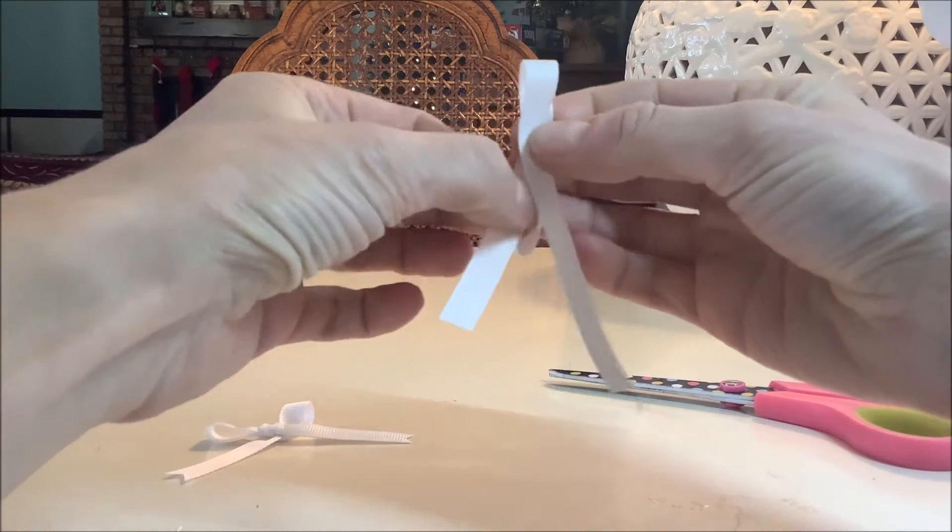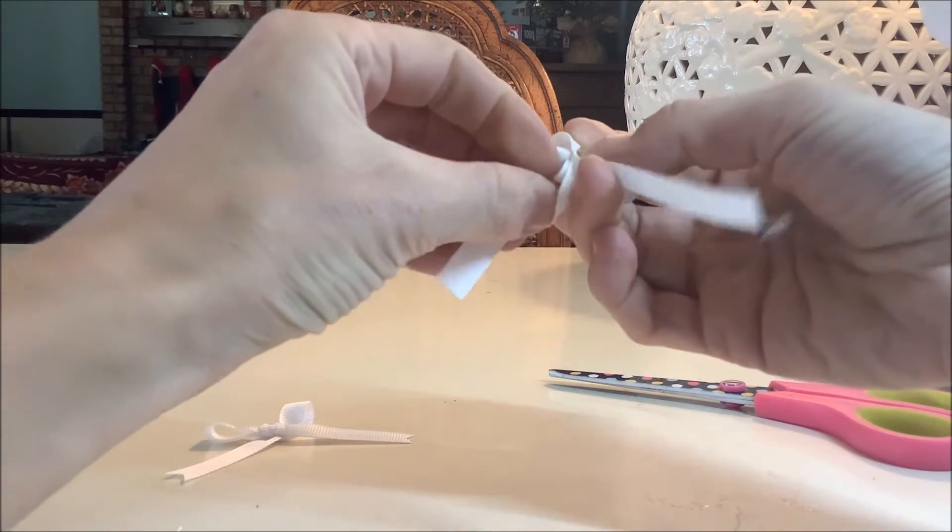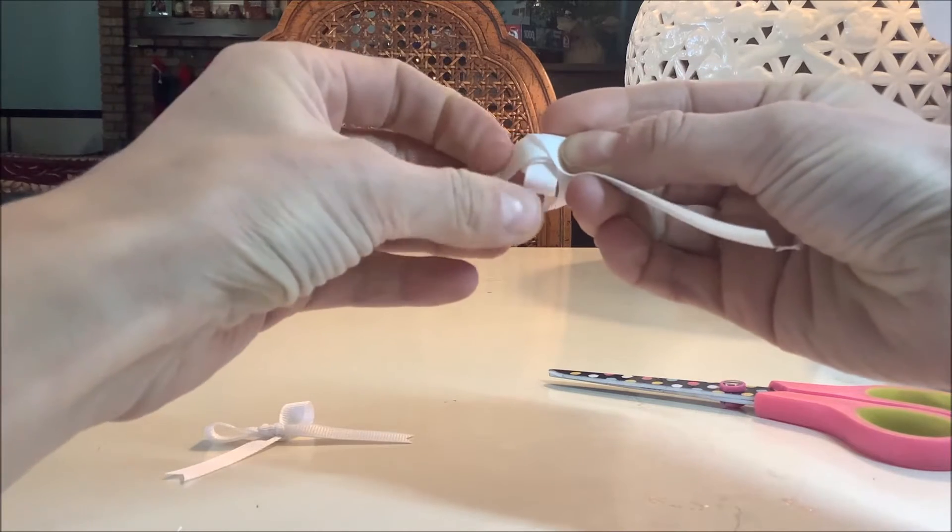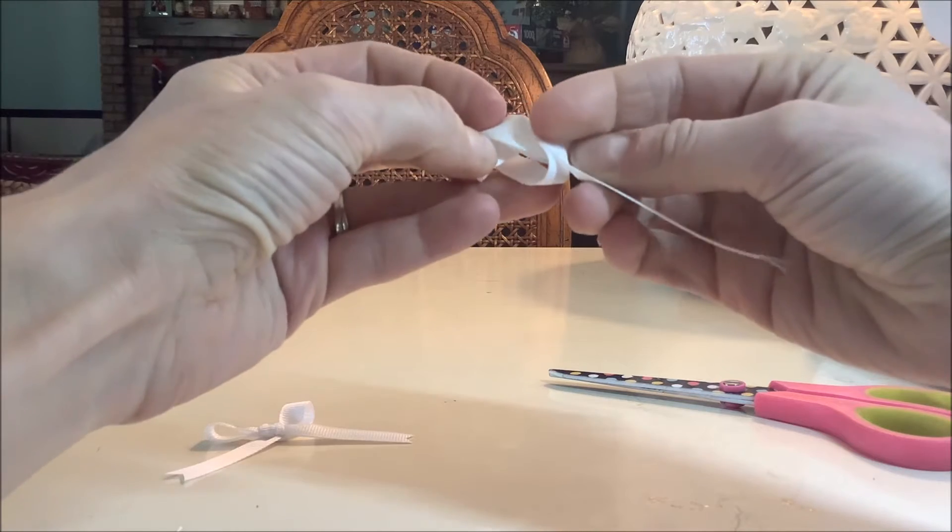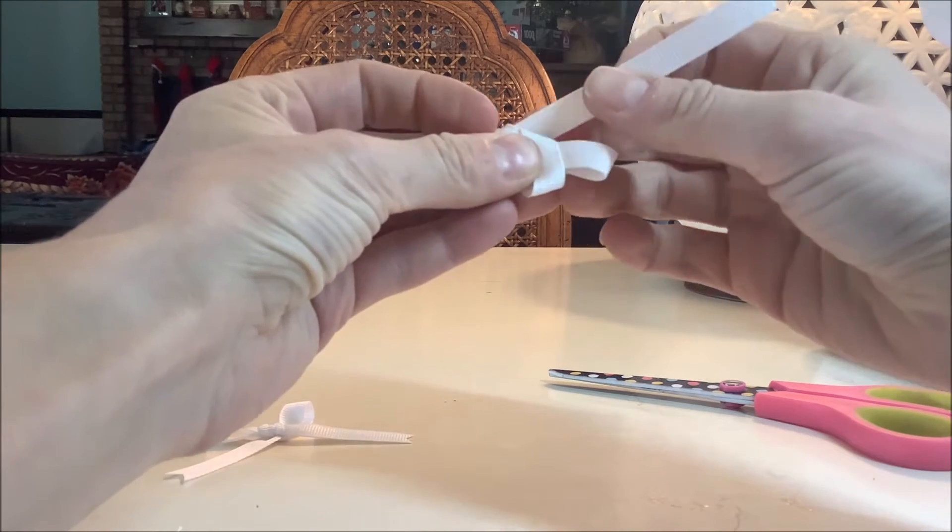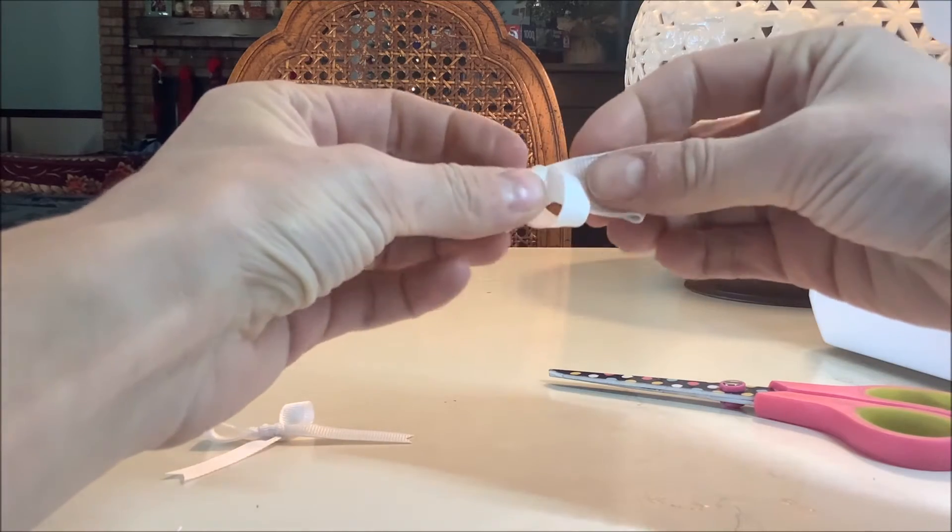Then I'm going to put the second loop over and through the hole here. I'm grabbing that loop and this end, and as you can see, this part right here is going to go toward the back, and I'm going to pull this along with that loop.